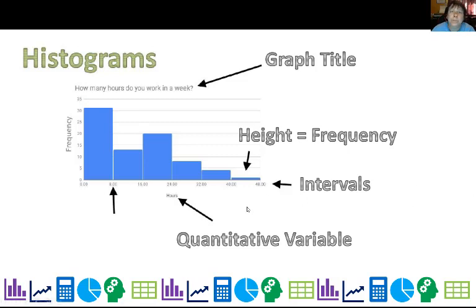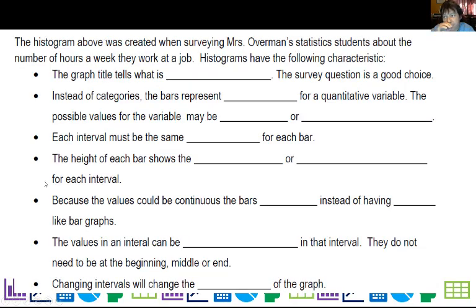You have intervals instead of categories. And the beginning number there that's right between the bars indicates the start of the next bar. So if I have an eight, it doesn't go in this bar, it goes in that bar. So let's go ahead and look at some more characteristics of histograms. First of all, the graph title tells what is measured and the survey question is a good choice if you're trying to do that.